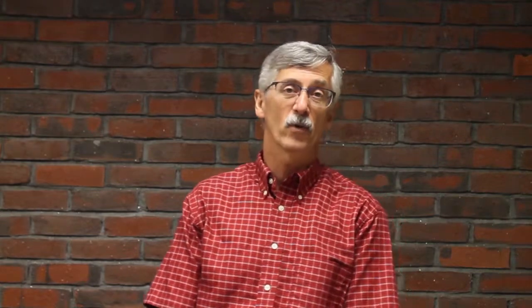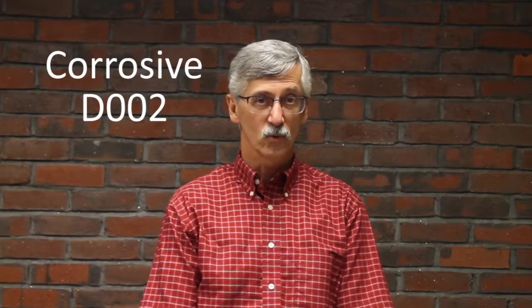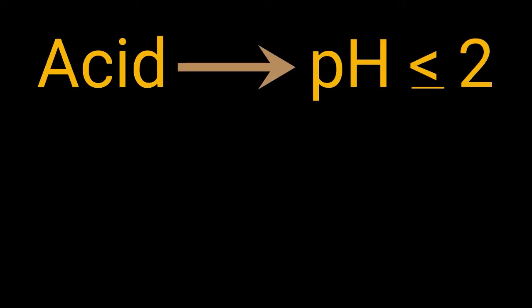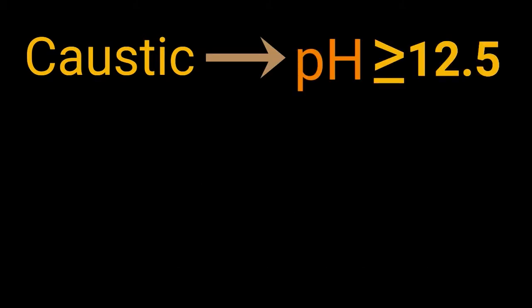Our second characteristic is corrosivity — something with a very high pH that we would call caustic, or a very low pH that we would call a strong acid. Things that are corrosive carry a waste code of D002. We say that if it is beyond a pH range of 2 to 12.5, we would consider it to be regulated. So an acid with a pH less than or equal to 2 would be a D002 corrosive hazardous waste. If it is a caustic with a pH greater than or equal to 12.5, it is a regulated corrosive hazardous waste.